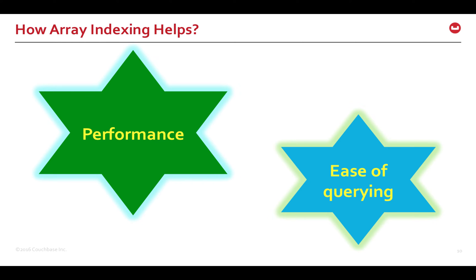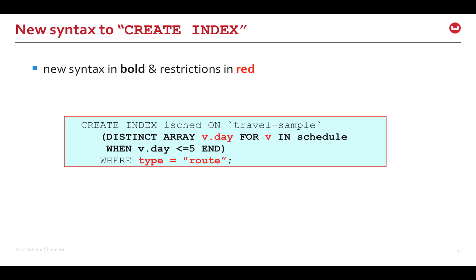In summary, array indexing brings performance and ease of querying with arrays. The CREATE INDEX statement has new syntax with the DISTINCT ARRAY clause highlighted in bold. This specifies the array elements and attributes to be used as index keys. The array elements can be iterated using the FOR clause and filtered using the WHEN clause. For example, this statement creates an index on the first five distinct day values in each element V of the array schedule.